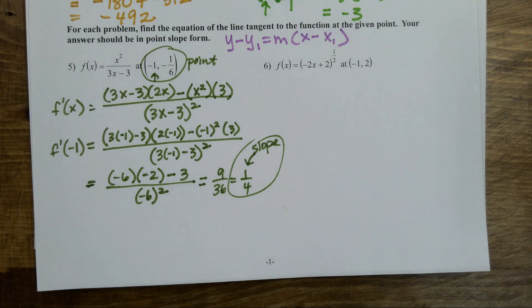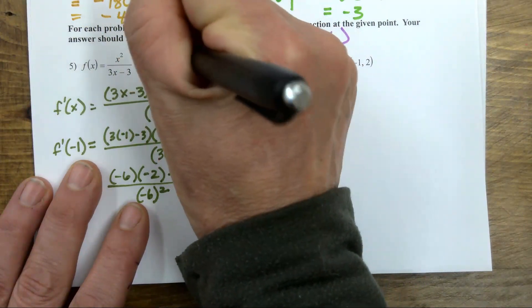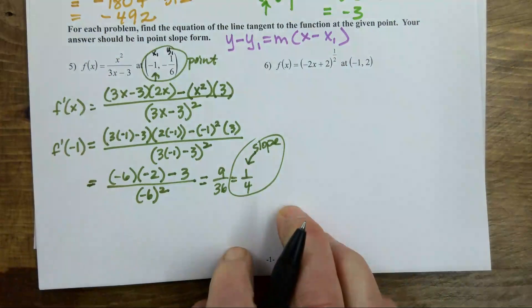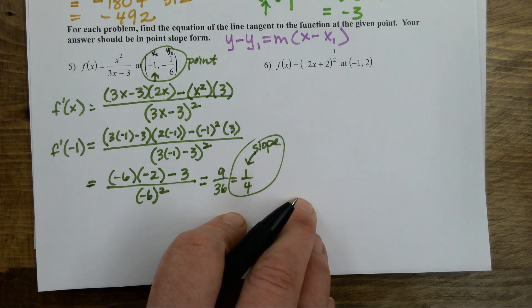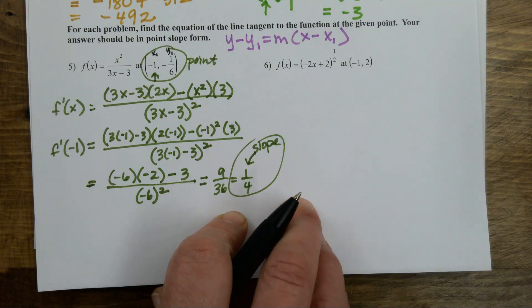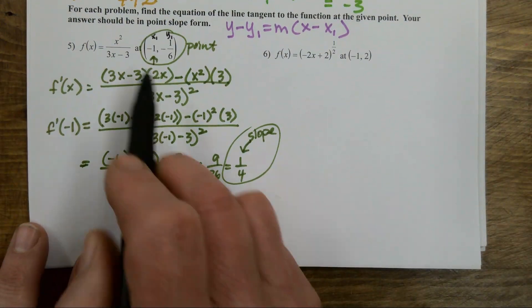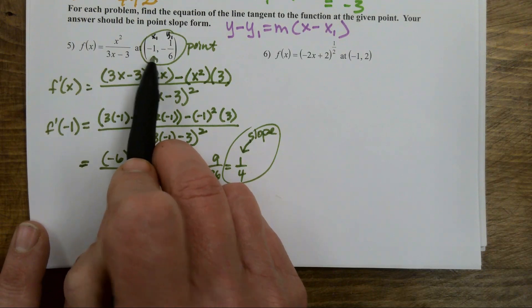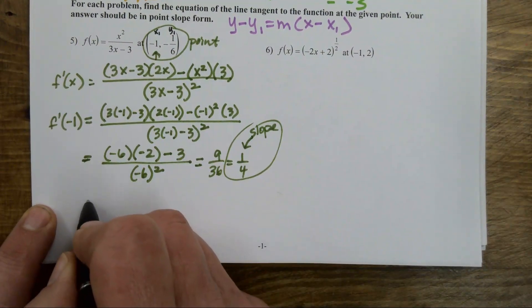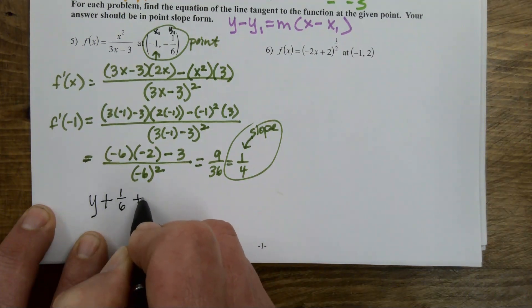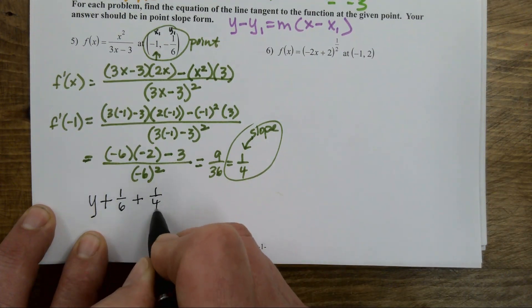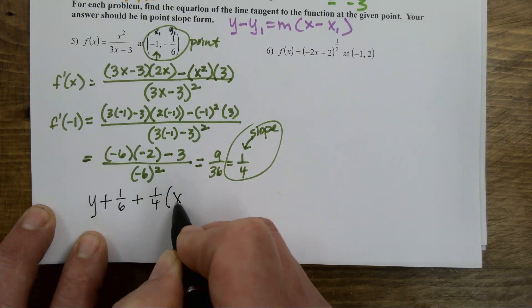The point is my x1, y1 — one x value and one y value that falls on this function. The slope is the actual slope at that given point. So my equation is y minus negative one-sixth, equals one-fourth times x minus negative one.